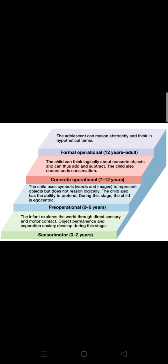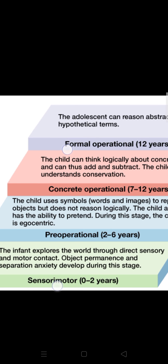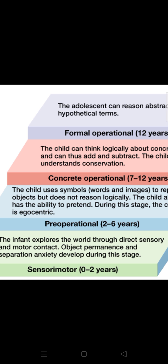The second stage is the pre-operational stage. The key word here is symbols. After two years, the child recognizes the world through symbols and images. For example, if you show a child aged two to six years the letter A, even if you don't write it fully, they can tell that it is A. They recognize it through symbols and signs.